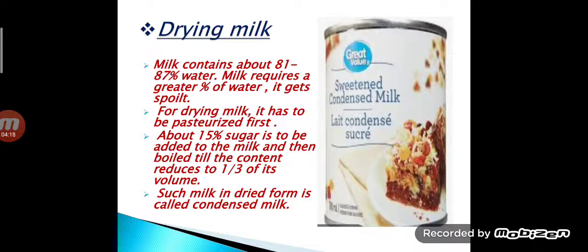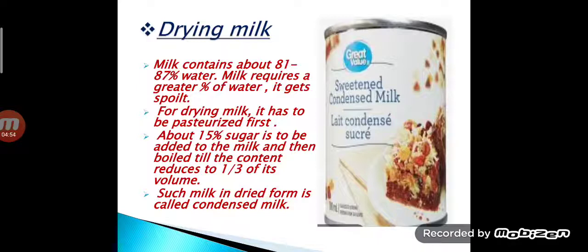The next method is drying milk. Milk contains about 81 to 87 percent water, which means it requires a greater amount of storage space. Due to the greater percentage of water, it gets spoiled — the taste of milk gets changed. For dried milk, it has to be pasteurized first. About 15% sugar is added and the mixture is boiled until the content reduces to one third of its volume. Such milk in dried form is called condensed milk.